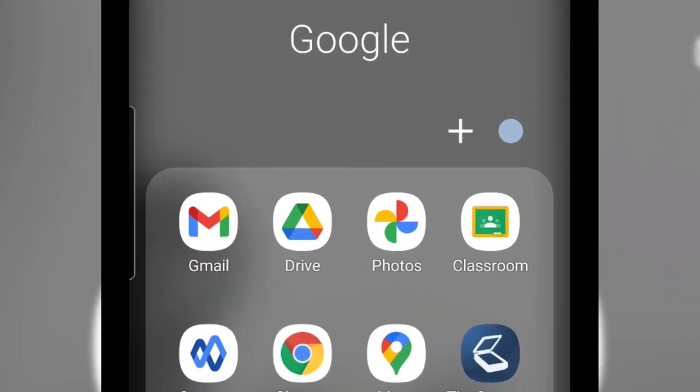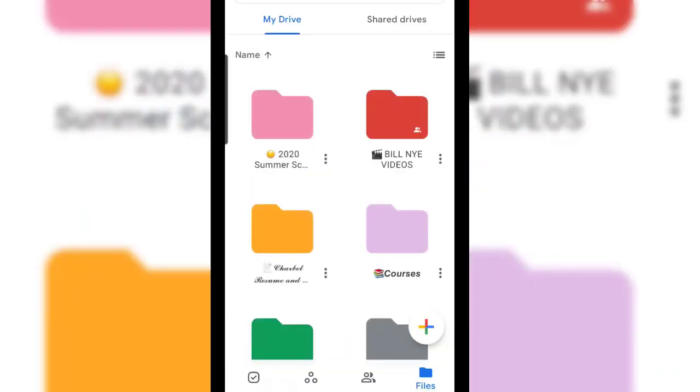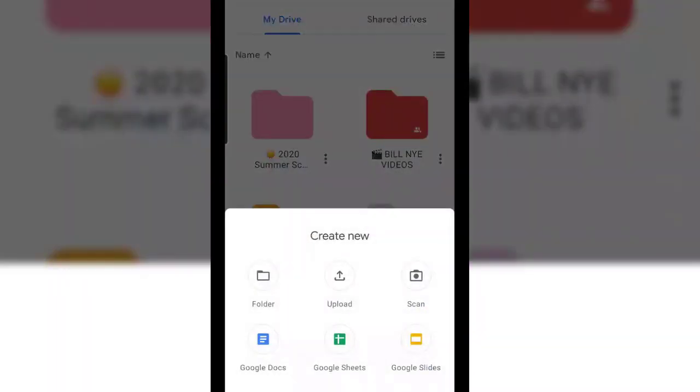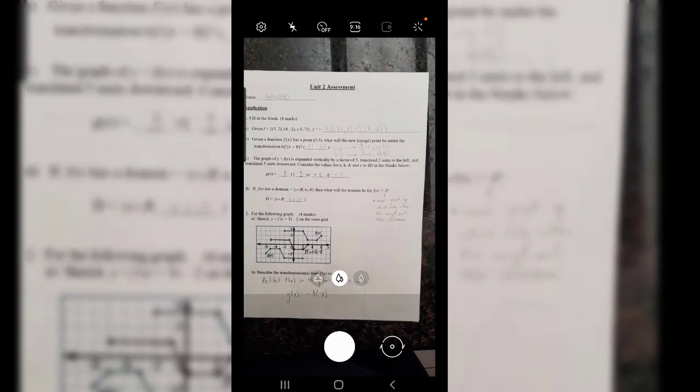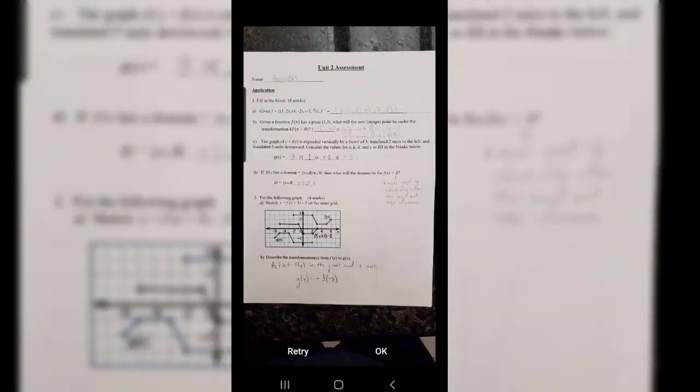To do this on an Android, go into your Drive app, click on the plus sign, and find Scan on the top right. Make sure you get the page in, take a picture, and if you like it, hit okay.